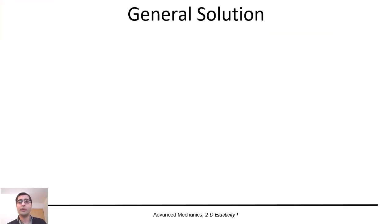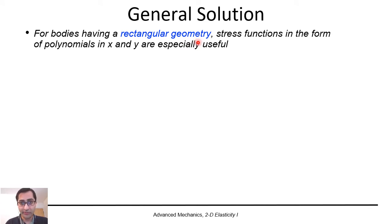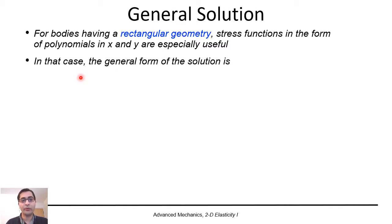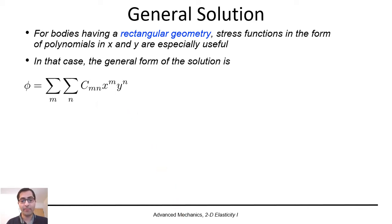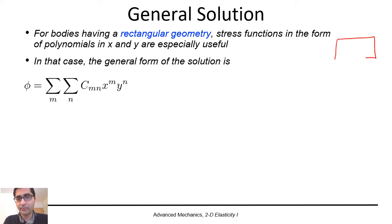Now let's see how to form a general solution. For bodies having rectangular geometry, stress functions in the form of polynomials in x and y are especially useful. The general form of the solution is phi equal to the double sum over m and n of c_mn times x^m times y^n. If the 2D body or the cross-section has a rectangular shape, we can assume the stress function has this general polynomial form.